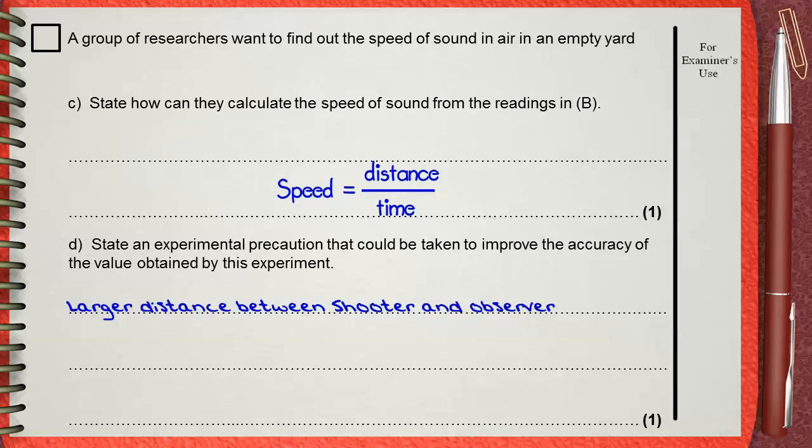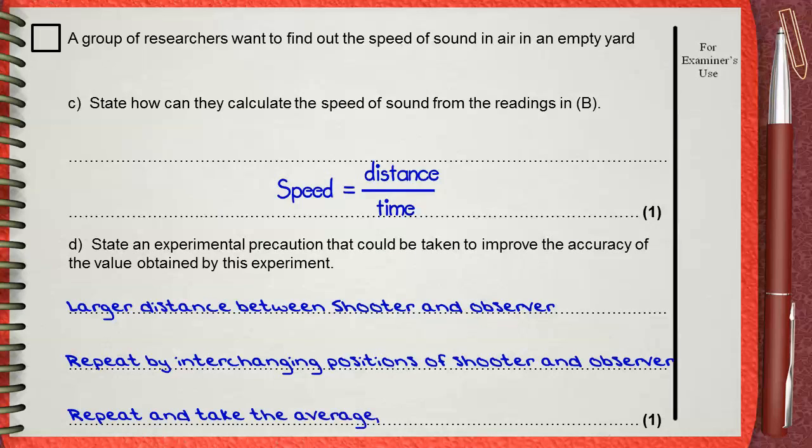Another precaution is we can repeat the experiment by interchanging positions of shooter and observer. This is to avoid the effect of wind. Another simple thing is you can repeat and take the average. Only one precaution is needed to get the mark.